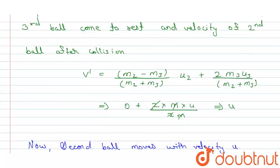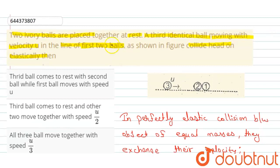So this is the explanation and here we conclude that the third ball comes to rest with second ball while the first ball moves with speed u. So here option is correct. That's it. Thank you.